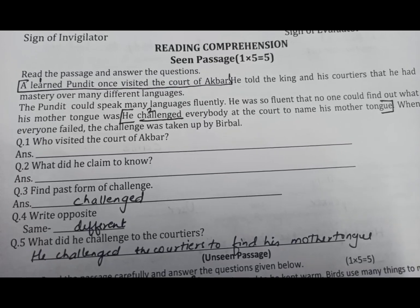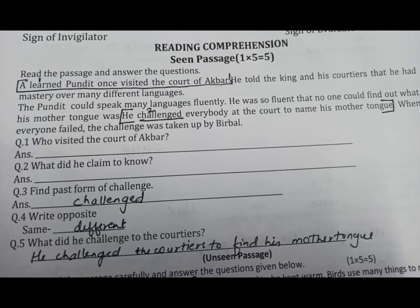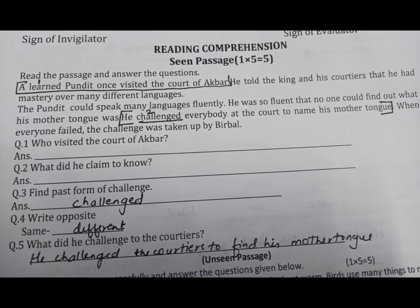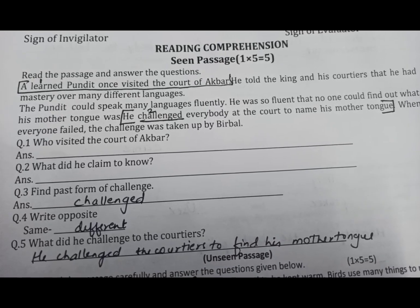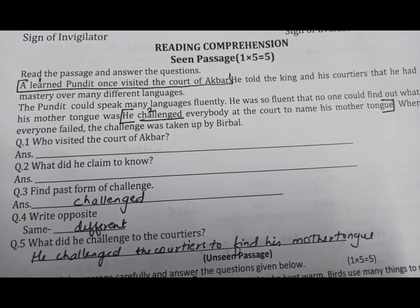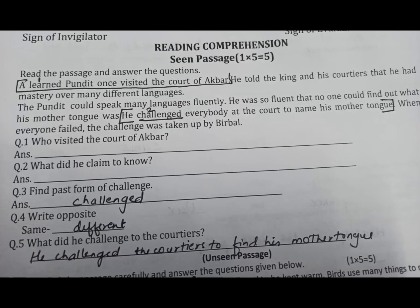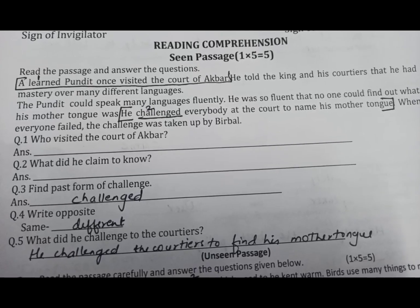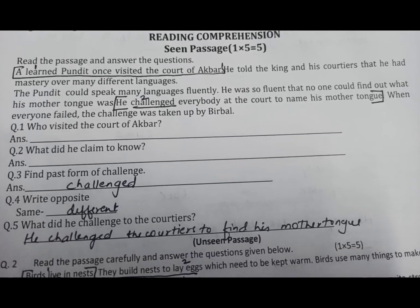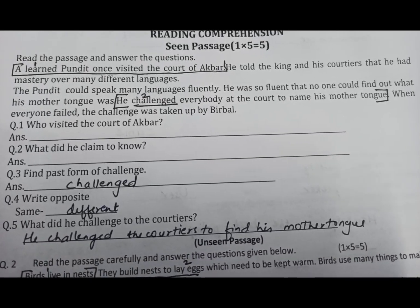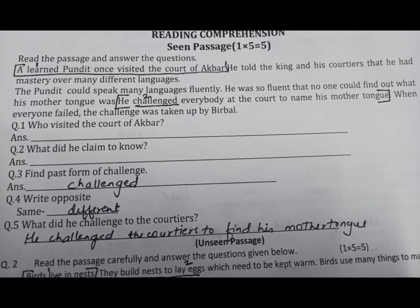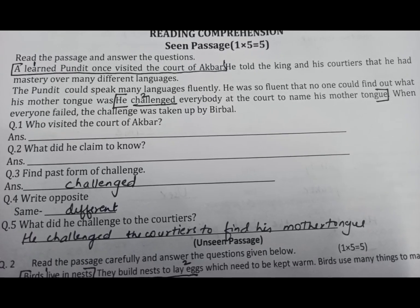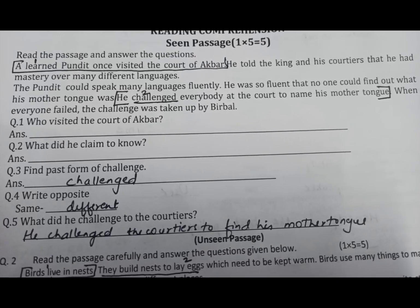He told the king and his courtiers that he had mastery over many different languages. Usne raja se kaha ki usse bohut saari bhaashayein aati hain. The pandit could speak many languages fluently — woh bohut saari bhaashayein bol bhi sakta tha. He was so fluent that no one could find out what his mother tongue was. Itnay achche se woh saari bhaashayein bolta tha ki kisi ko pata hi nahi chalta tha ki uski bhaasha kaun si hai.